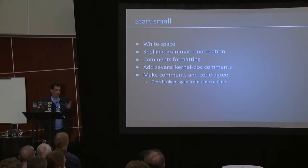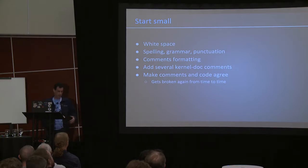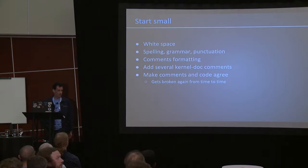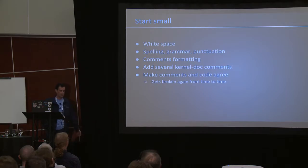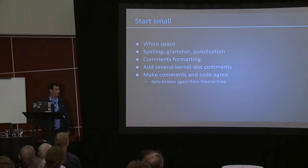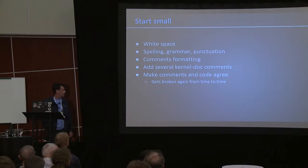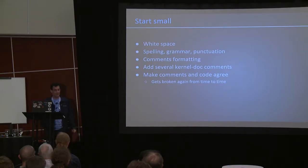Since then I've done a couple of things. I understood that covering it all in one pass is impossible — there's too much code, and you really need to understand it to document it. So I started small with mechanical changes: whitespace, spelling, grammar — which sometimes turned out not to be correct — and some formatting to kernel documents. I added a few and made kernel doc actually reflect what the function is doing. It still gets broken from time to time; the last one was about a week ago.